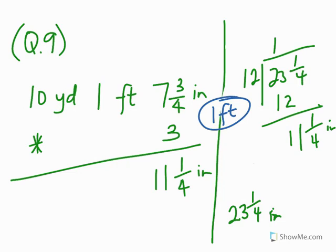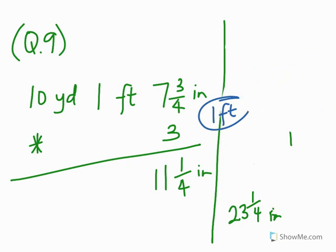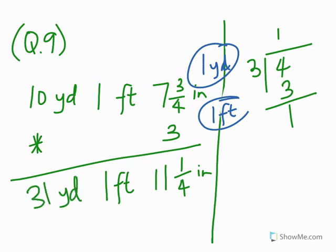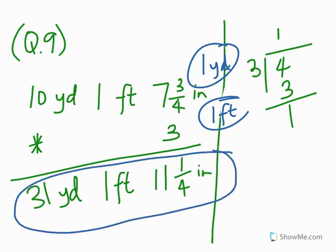We need to get some yards from the feet. How many yards can we get from 4 feet? 3 feet is 1 yard, so we divide 4 by 3: we get 1 remainder 1. The integer part is in yards — we get 1 yard — and the remainder is 1 foot. Then 3 times 10 yards is 30 yards, plus 1 yard is 31 yards. So our answer becomes 31 yards, 1 foot, 11 and 1/4 inches.